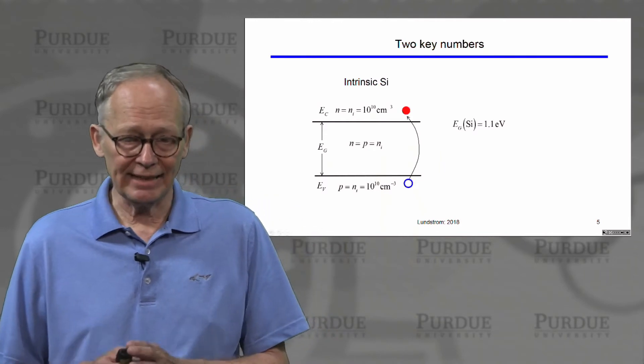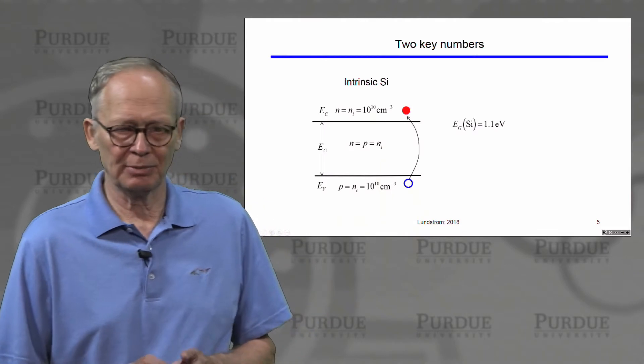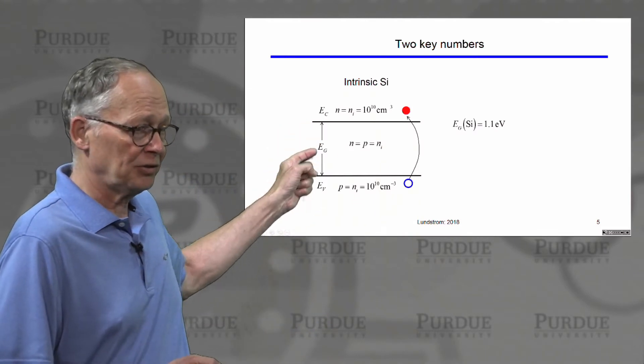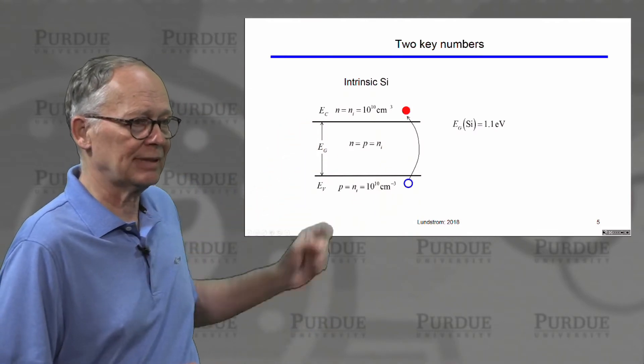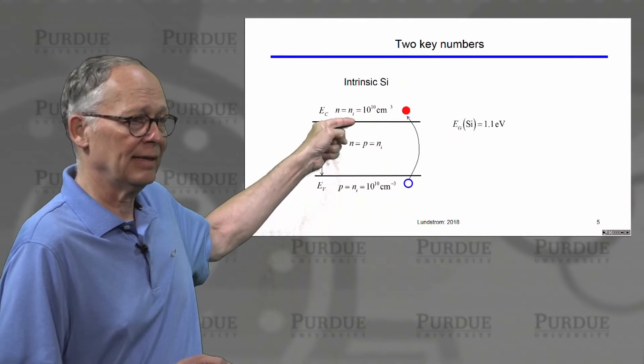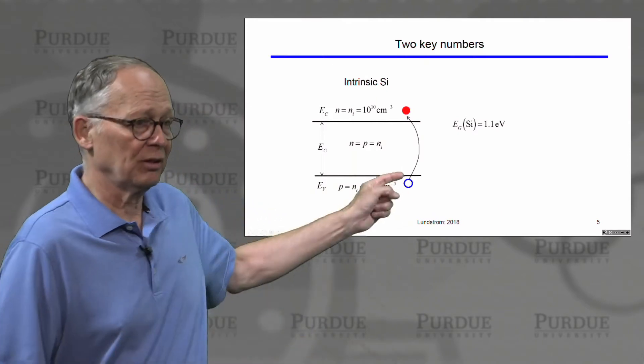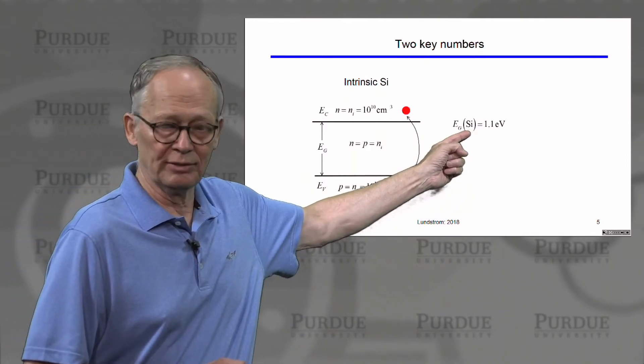Now in looking at any of these semiconductors, there are a couple of key numbers that are very important to us. And we've talked about these before. The first number is the band gap, the separation between the valence band, the top of the valence band, and the bottom of the conduction band. In silicon, that number is 1.1 electron volts.